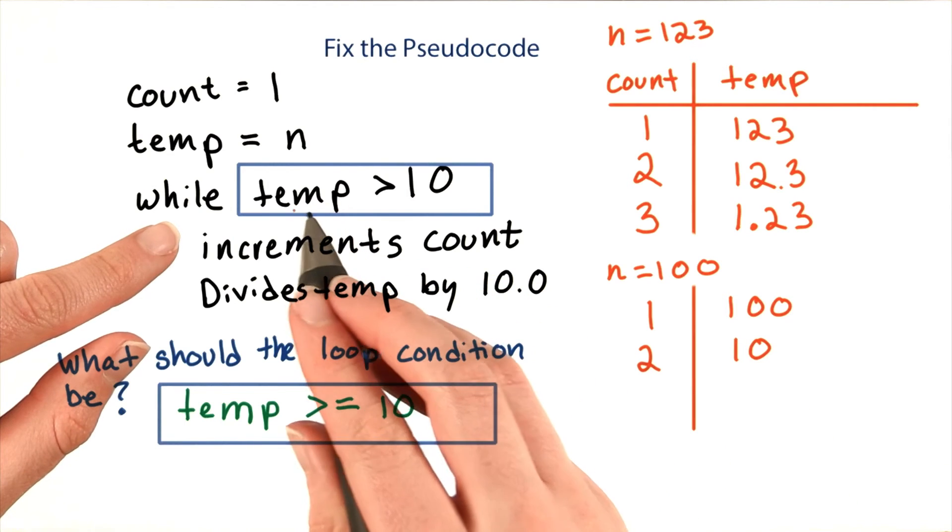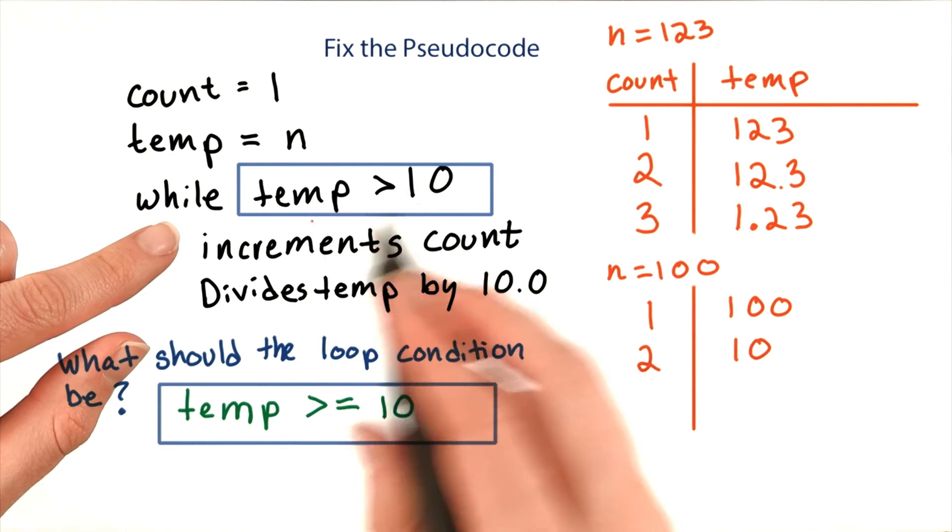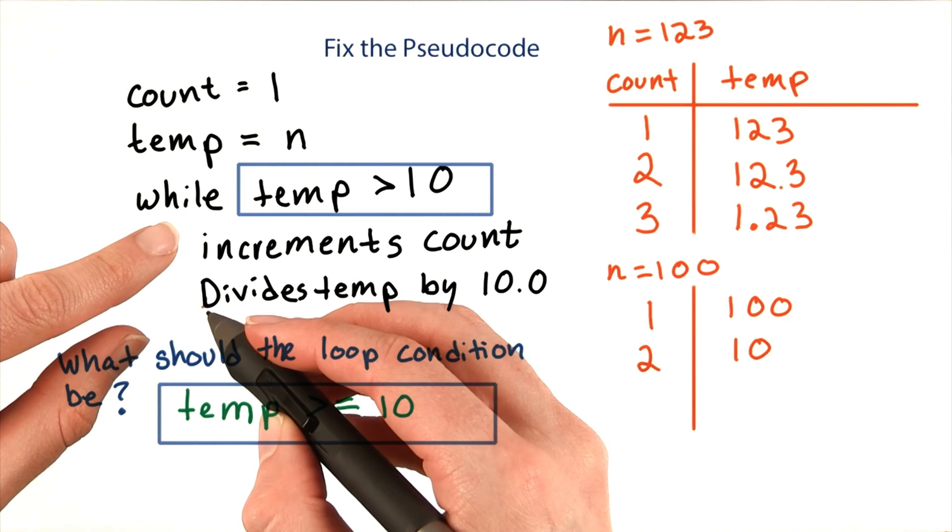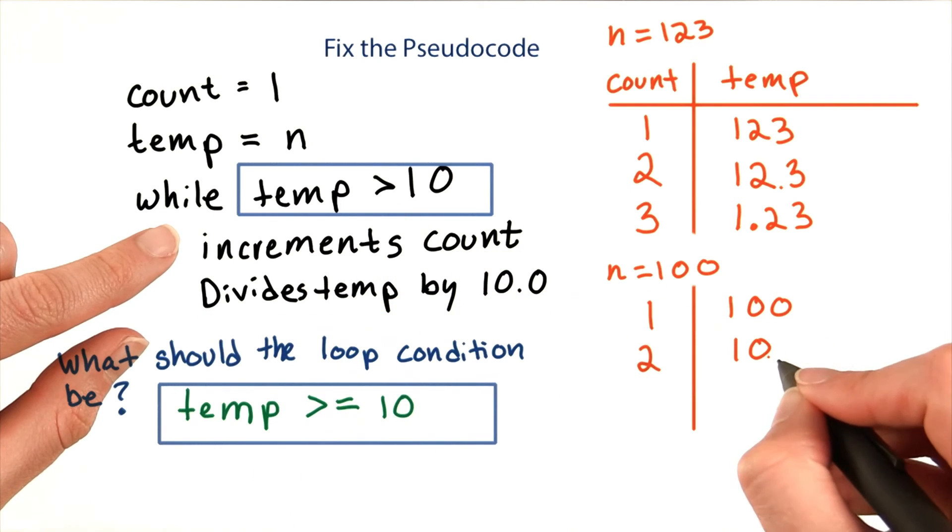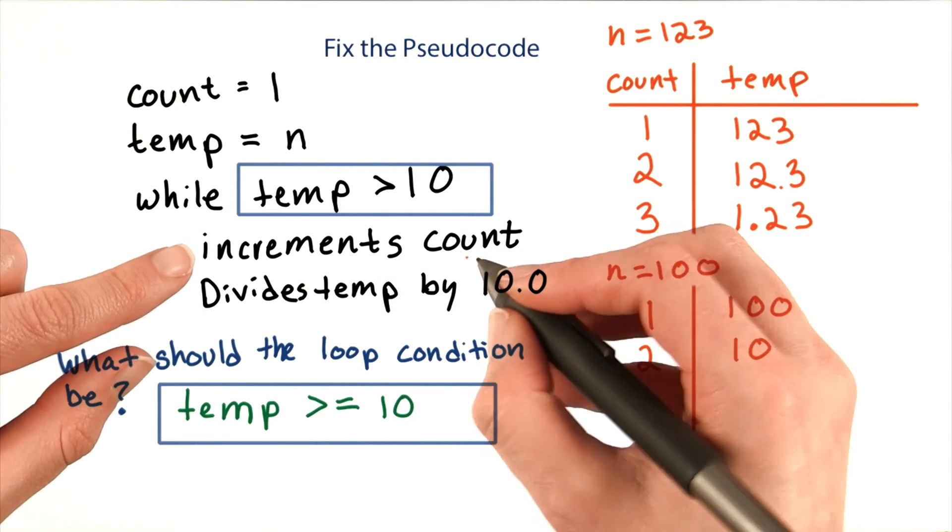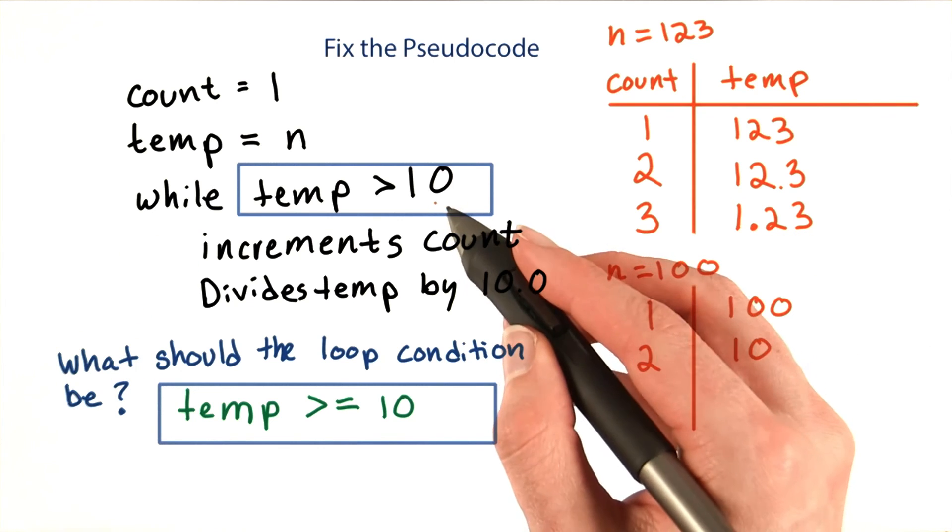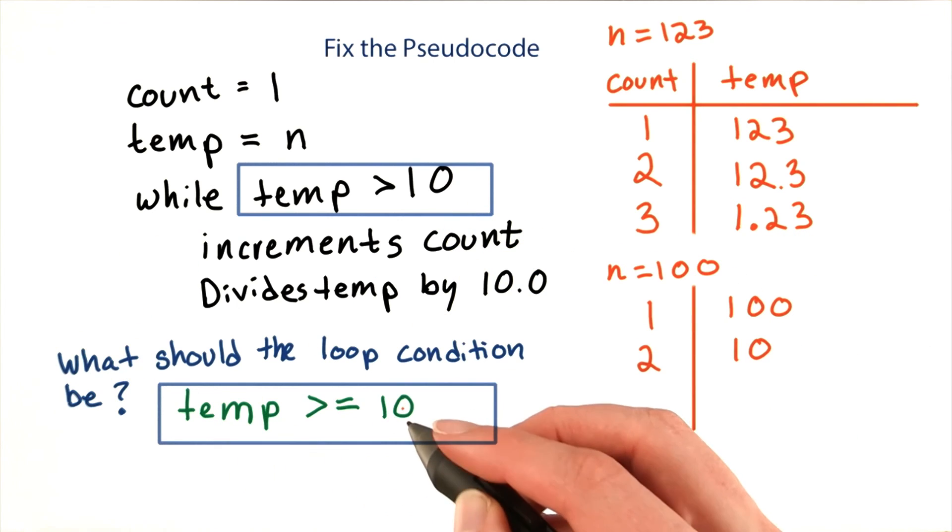But this time, 10 is not greater than 10, it's equal, so it skips out immediately. When in fact, we still had two digits left. We needed to increment count again. This is why the condition should be temp is greater than or equal to 10.